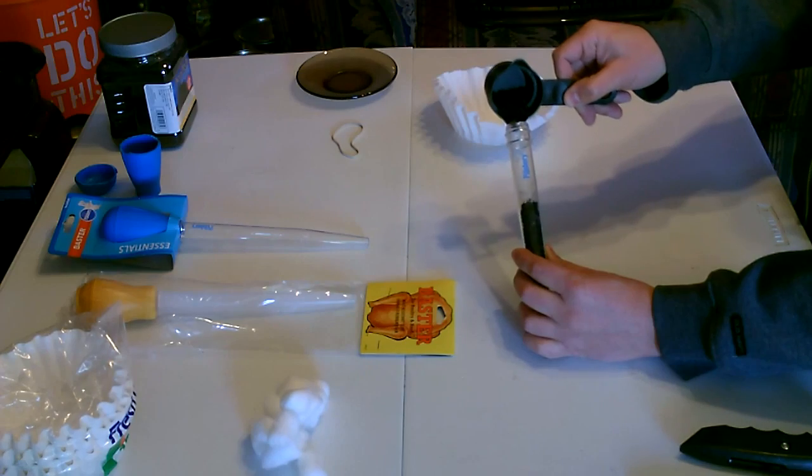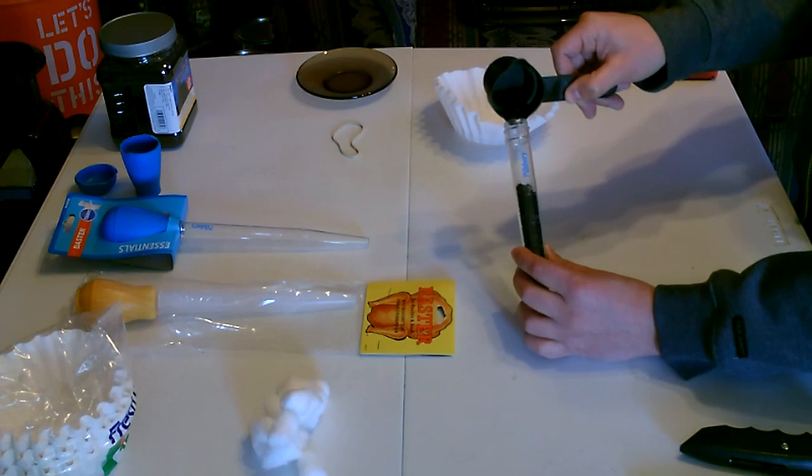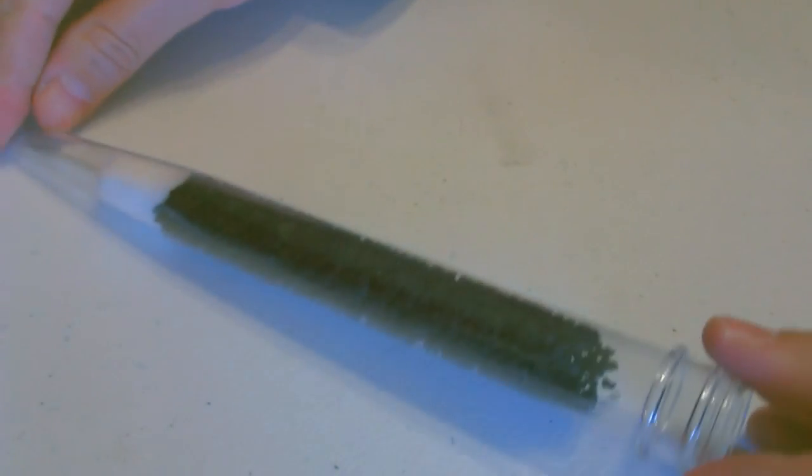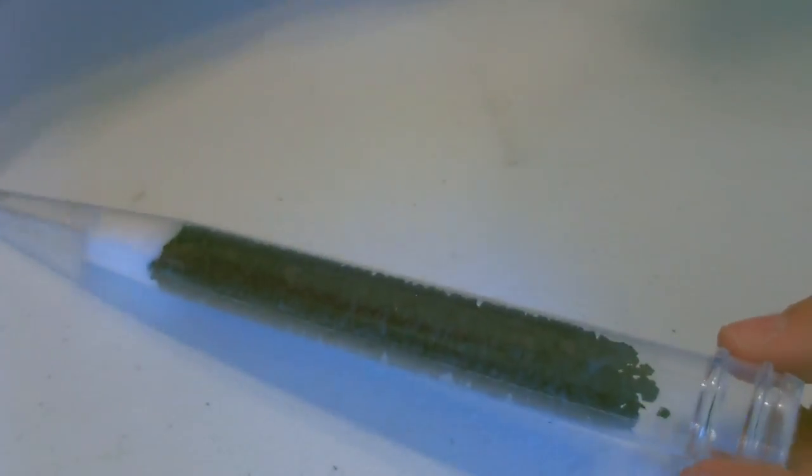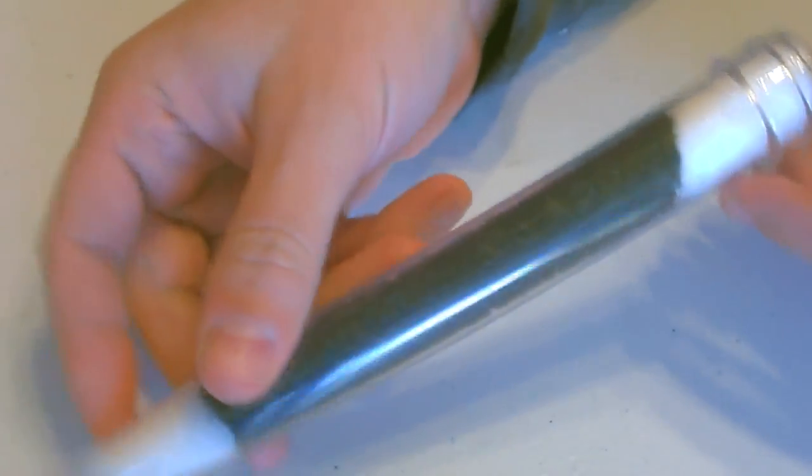Start by putting a couple cotton balls in, then add your rinsed activated carbon, almost to the top. Okay so you've got that. Two more cotton balls. There it is.